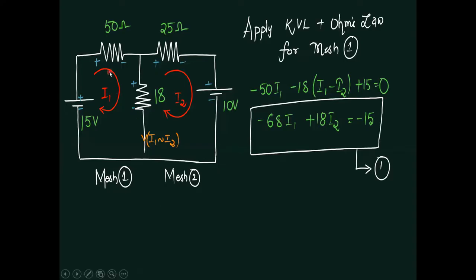We have chosen 50 ohms, 25 ohms, and 18 ohms resistors. We are having two sources: a 50 volt voltage source and a 10 volt voltage source. Our intention is to calculate the current across this particular 18 ohms resistor.